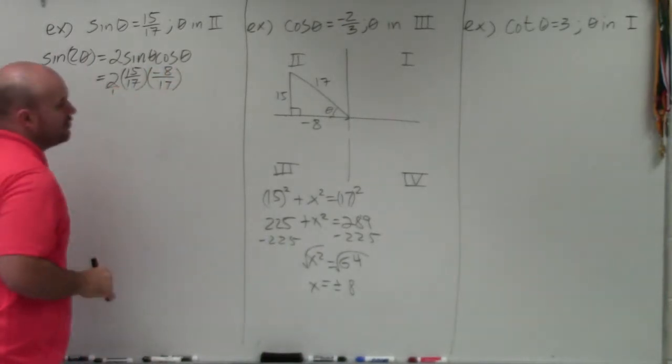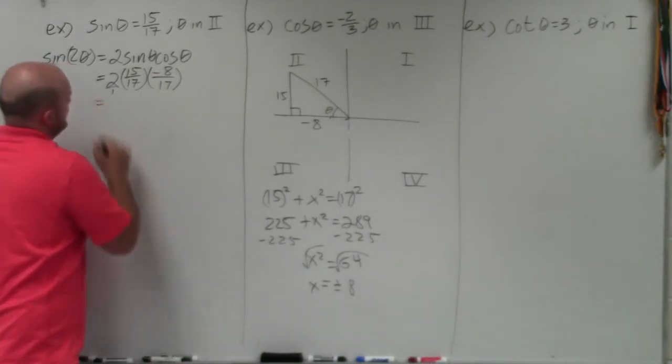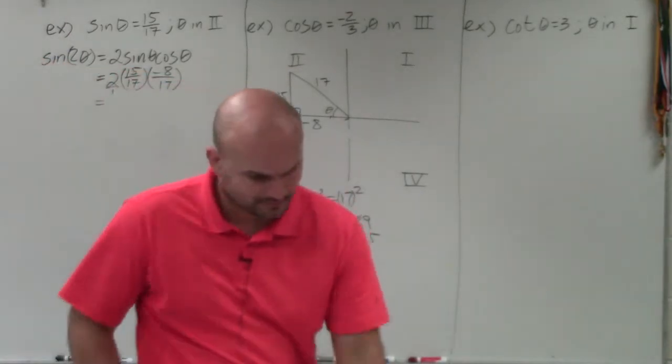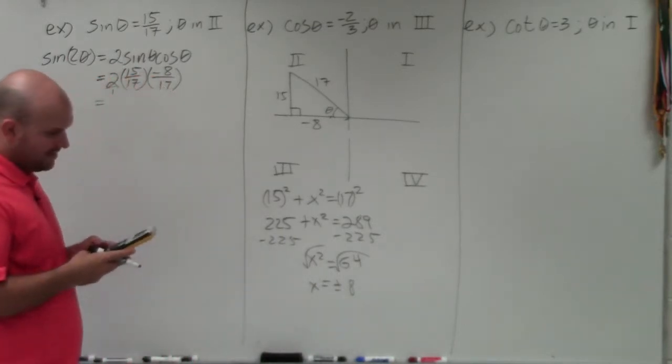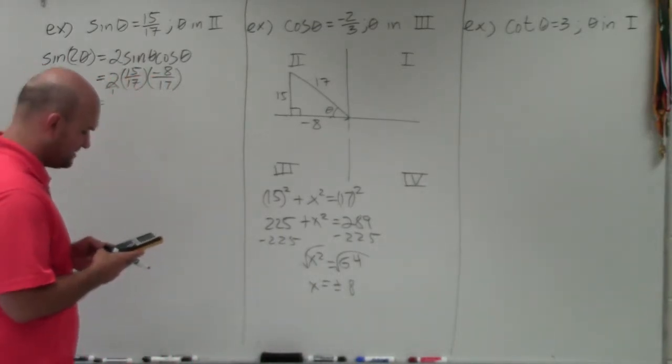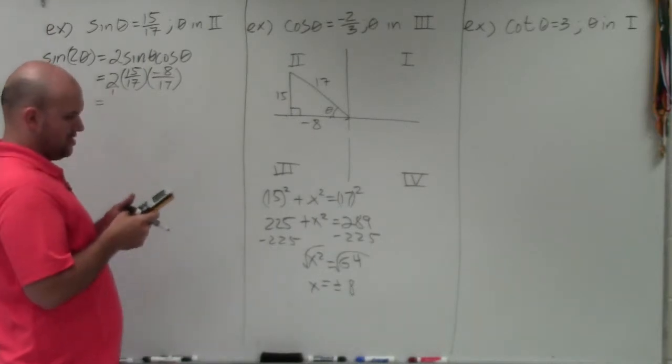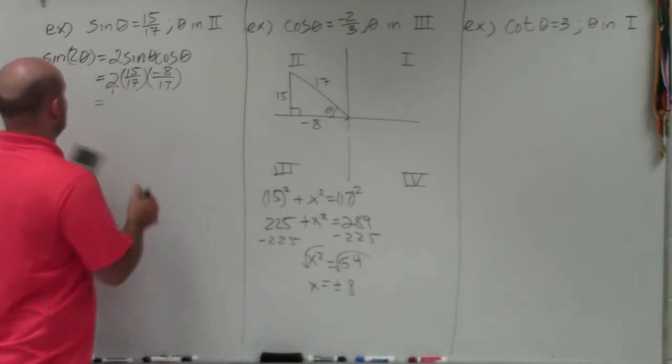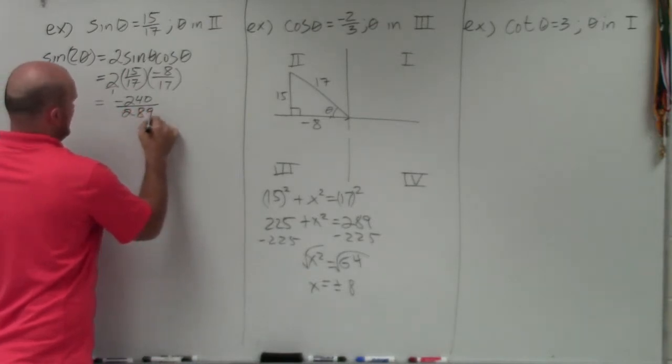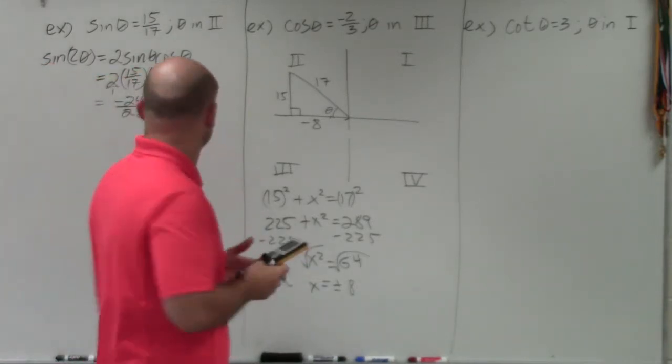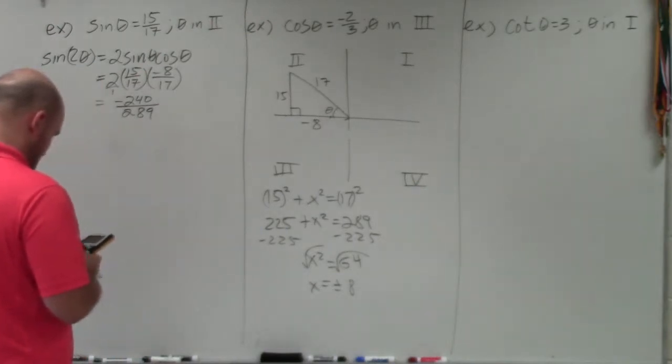Now remember, you can rewrite the 2 as like 2 over 1. So therefore, I don't know these all on top of my head and I don't really want to do all the math here. So I'm just going to do 15 times 8 times 2. So it's going to be negative 240. So that's going to be negative 240 divided by 289. Let me just double check. Yeah, OK. 15 times 8 times 240. Very good.